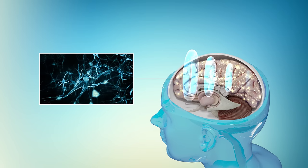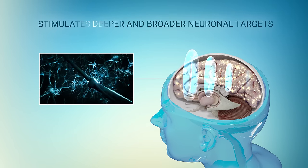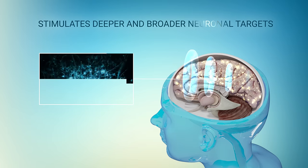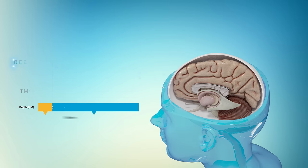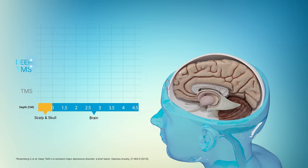Transcranial magnetic stimulation induces an electric field in the brain that stimulates neurons. The intensity of the field is always strongest at the scalp and it decreases as the field propagates into the brain.